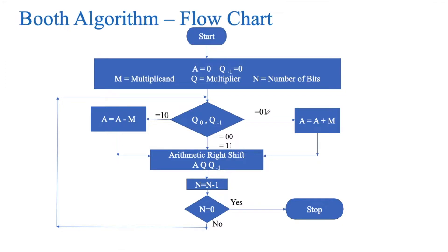If it is 01, we add the contents of A with the contents of M (the multiplicand), store it back in A, and then shift. After replacing A with the new value of A plus M, we shift that content along with Q and Q-1, reduce N by 1, and check whether it equals 0. If it is 10, we subtract M from A, restore the value in A, then shift again, reduce N by 1, and check whether N equals 0. If yes, we stop; if not, we redo the algorithm.